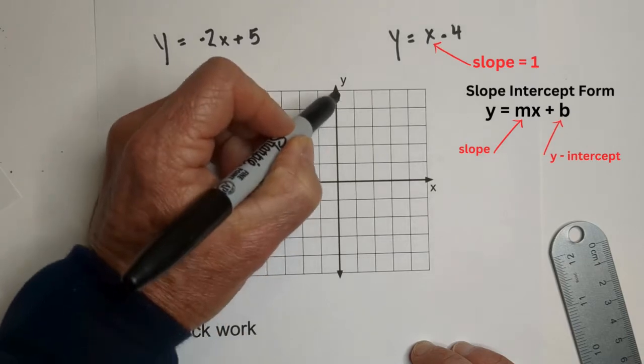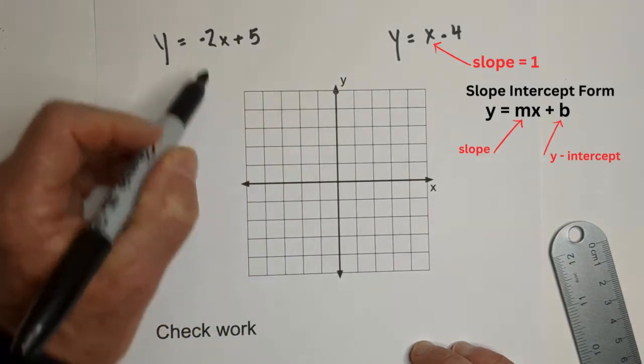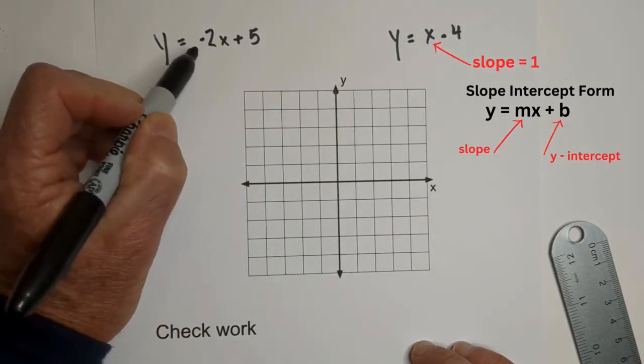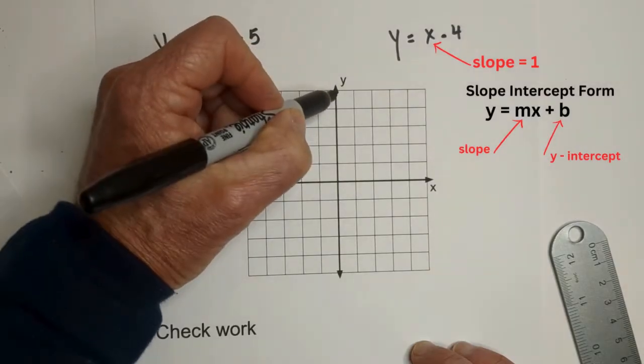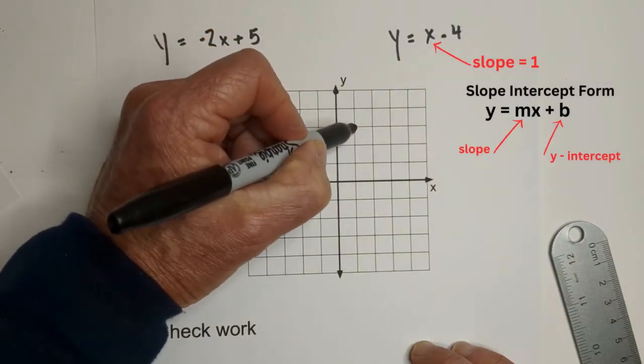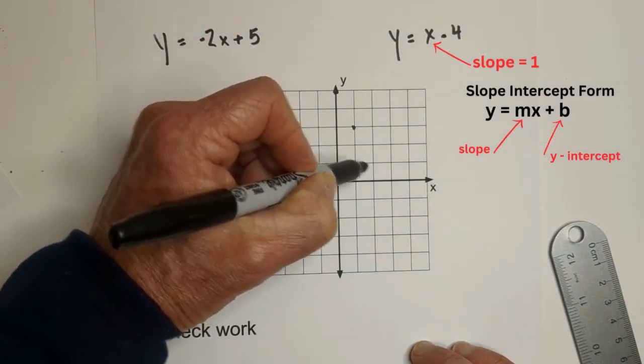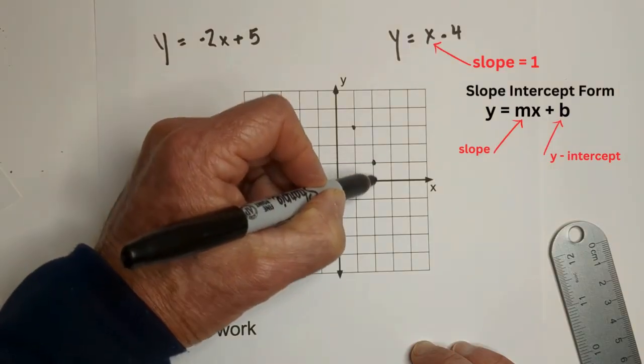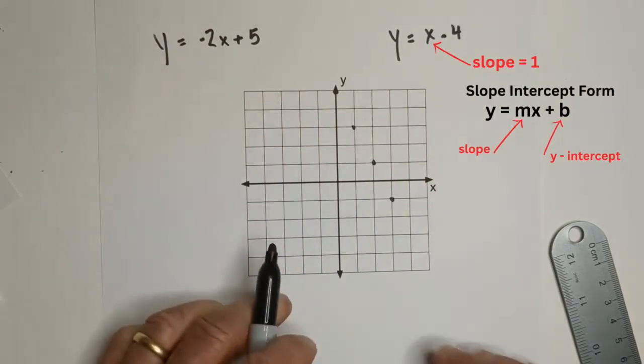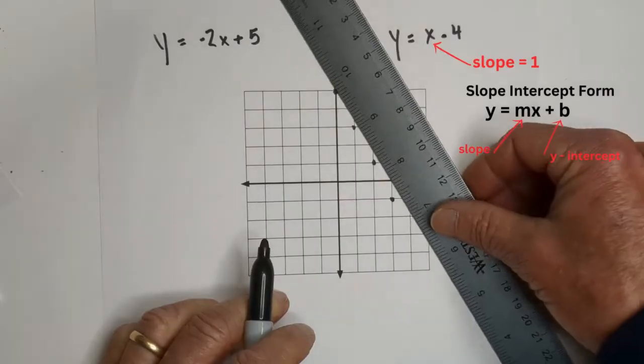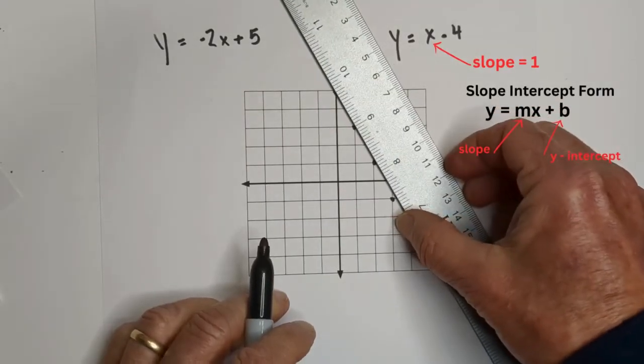1, 2, 3, 4, 5. So we'll put a mark. And then the slope is negative 2 over 1. So we're going to go down 2 over 1. Down 2, 1, 2 over 1. And down 2 over 1. You don't have to do this many points, but I am. And let's go ahead and draw a line.